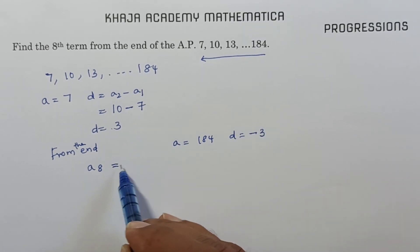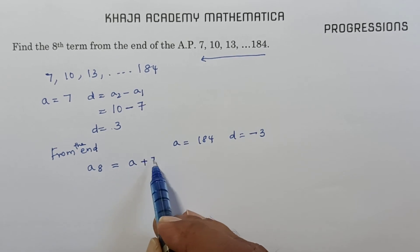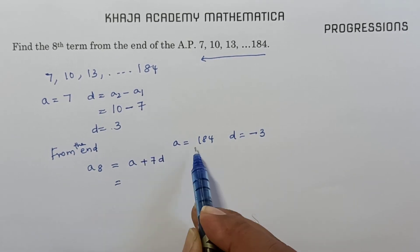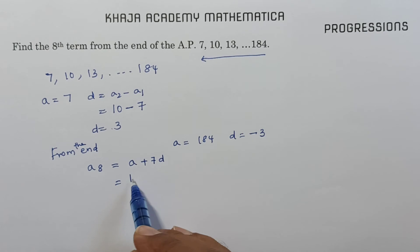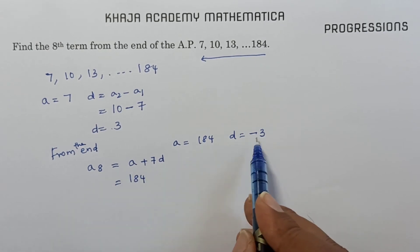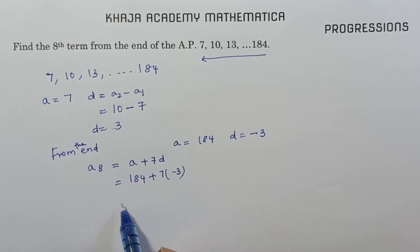If it is minus 3, we need to take plus 3. So A8 is nothing but A plus 7D. A is from the end, 184. And from the end, common difference is minus 3.